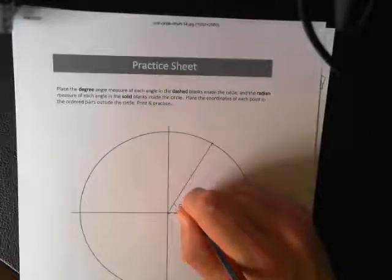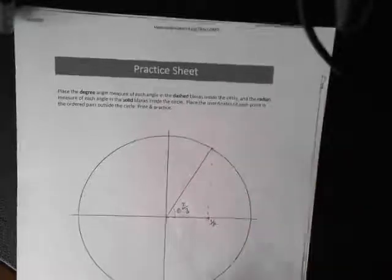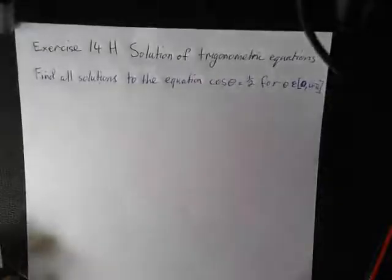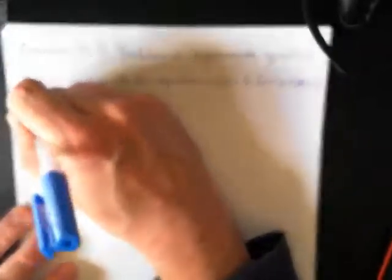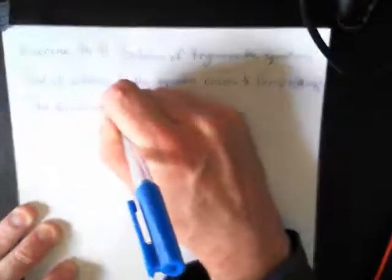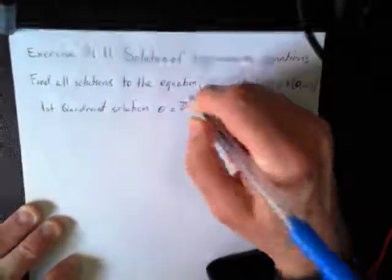Cos theta equals a half when theta equals pi on 3. So, what I've got here is I've got a unit circle, and this is pi on 3. Cos theta, this is a half right here. First quadrant solution, theta equals pi on 3. I'm going to put in brackets there, 60 degrees.